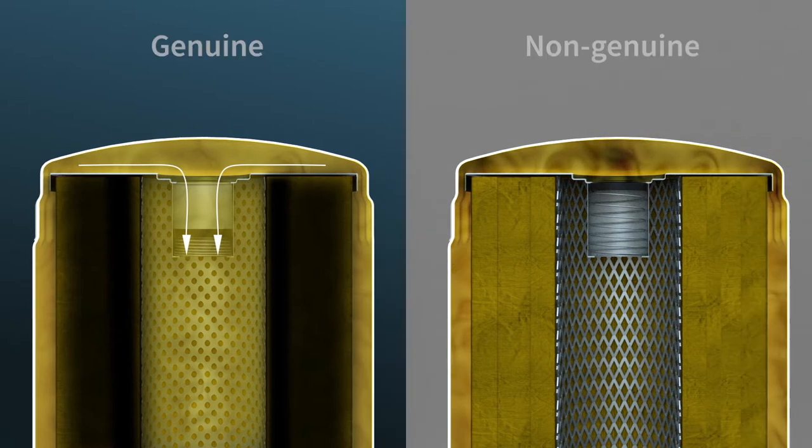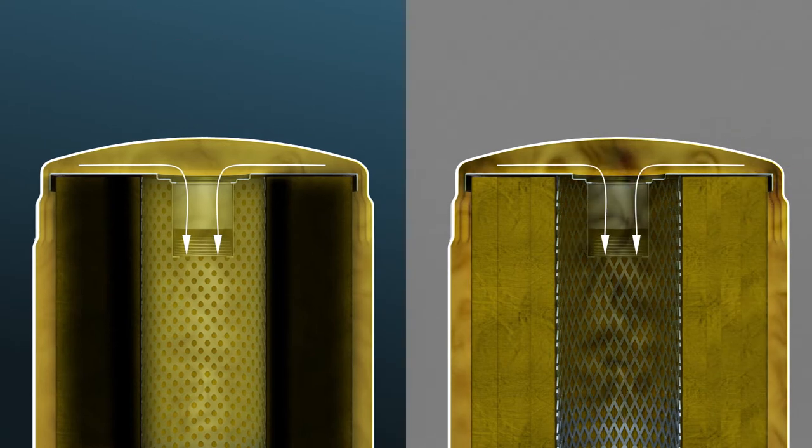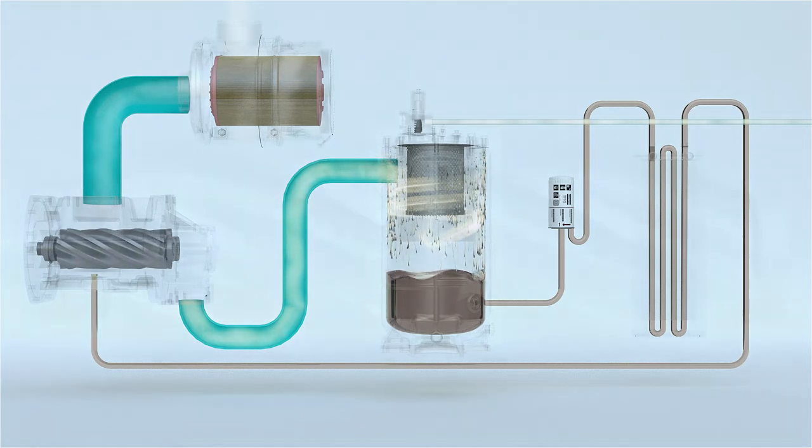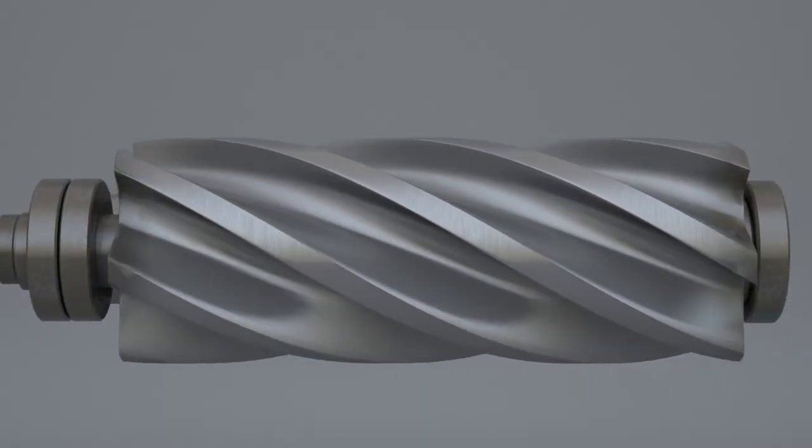If the bypass valve is too weak, it will open too easily, letting unfiltered oil flow freely into the system. This unfiltered oil will end up all over the oil circuit, damaging different components like bearings, coolers, and the compressor element.